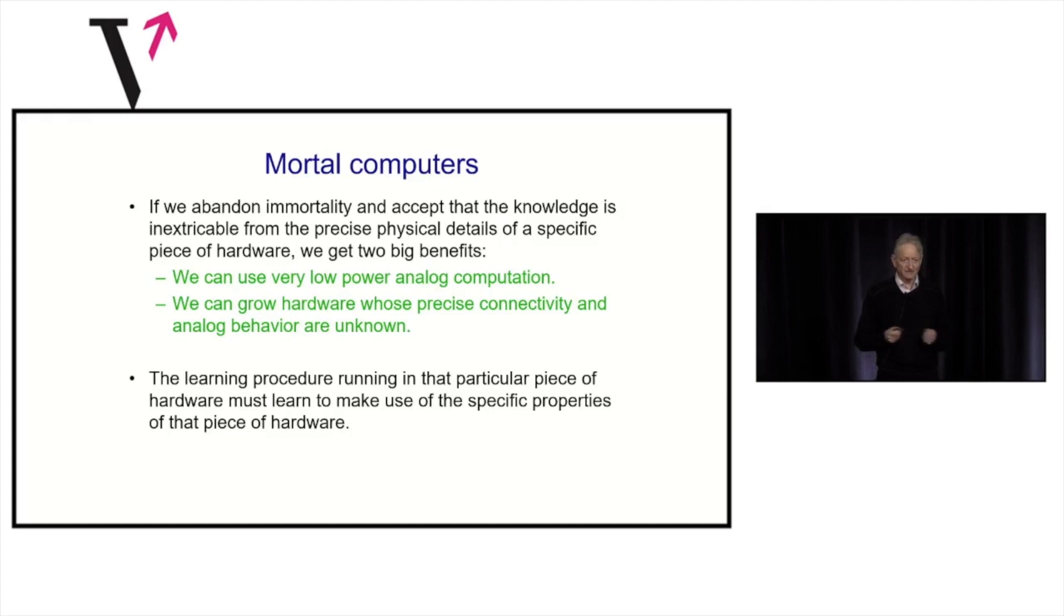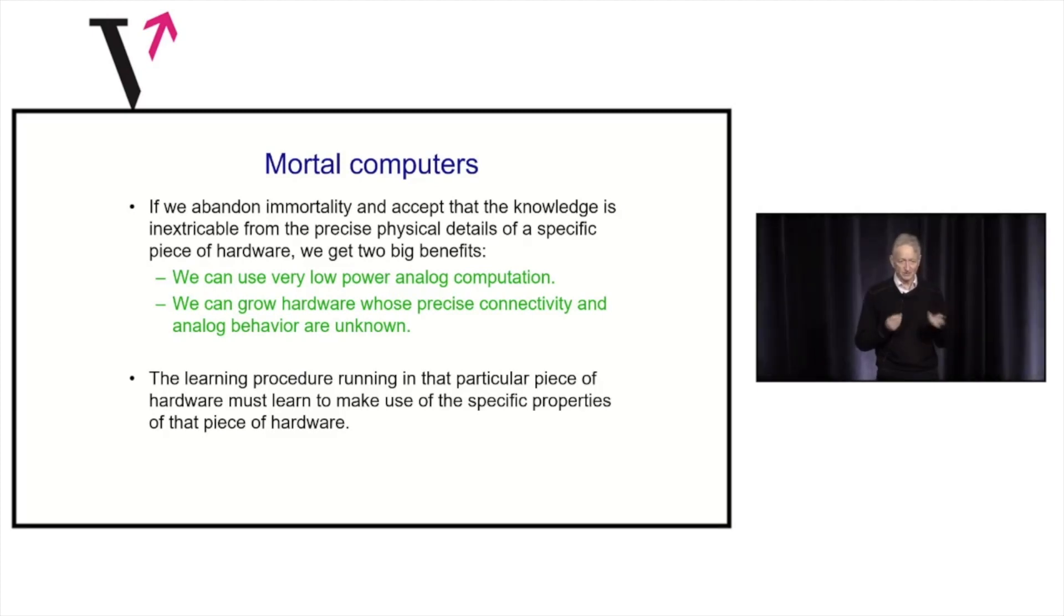Now, if we abandon that immortality, in literature, what you get back is love if you abandon immortality. But here, what we're going to get back is something even more important, which is low energy. We can use very low power analog hardware that's unreliable, and we don't need to know the precise connectivity of the hardware. So, the idea is that the whole field of computer science relied on separation of hardware and software. And people are now busy saying, if I have a big set of weights, how do I explain how it really works? I want to go in exactly the opposite direction. Sort of based on the brain, I want to say the knowledge and the hardware are intimately entangled and we'll never separate them.